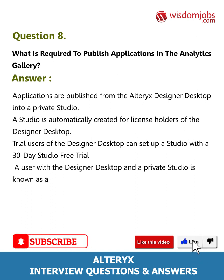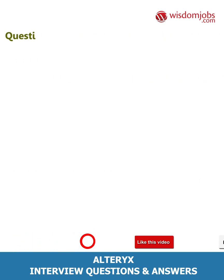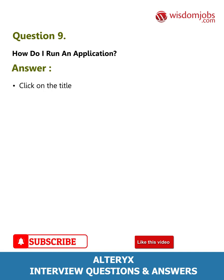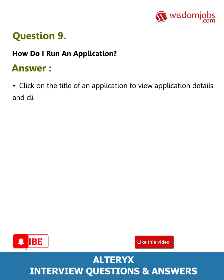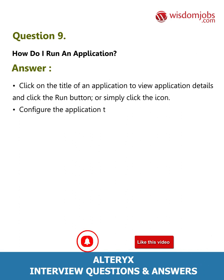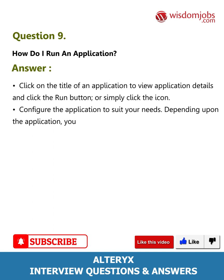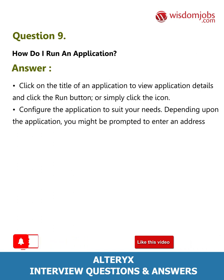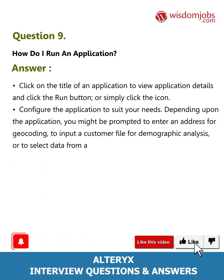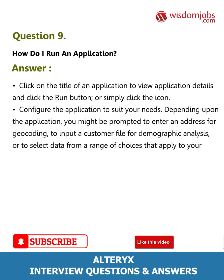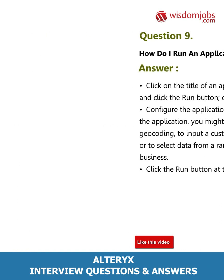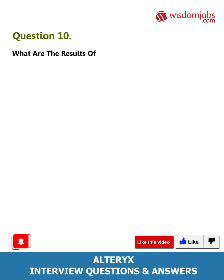A user with the Designer desktop and a private studio is known as a data artisan. Question 9: How do I run an application? Answer: Click on the title of an application to view application details and click the Run button, or simply click the icon. Configure the application to suit your needs — you might be prompted to enter an address for geocoding, input a customer file for demographic analysis, or select data from a range of choices. Click the Run button at the bottom of the application.